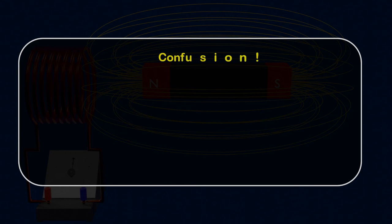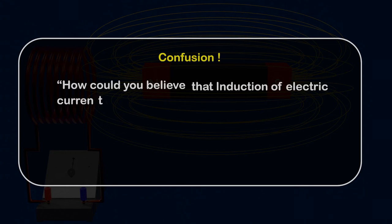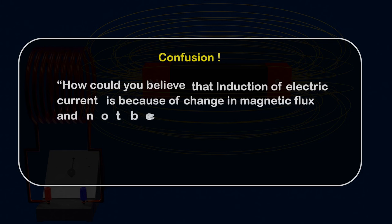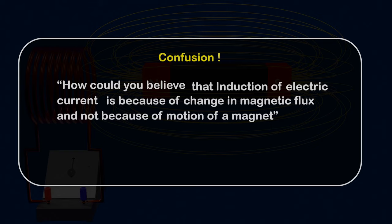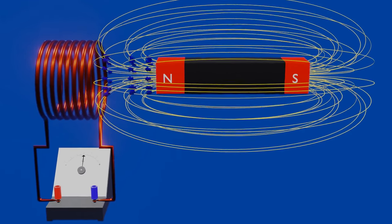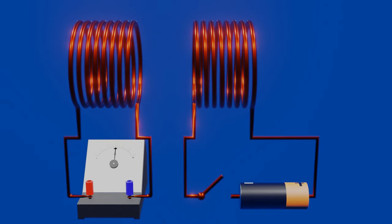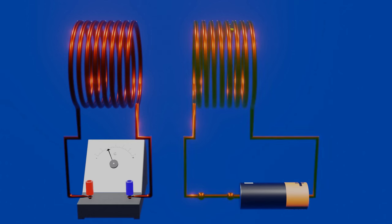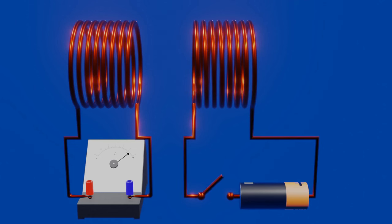It might leave you with the confusion of how you could believe that induction of electric current is because of change in magnetic flux and not because of motion of the magnet. To make it clear, let's do another experiment. This time we will replace the magnet with another coil connected in series with a battery in an open circuit. When we close the circuit, just for that moment the galvanometer connected to the adjacent coil shows an indication of induced current. A similar phenomenon occurs when we again open the circuit. But this time we don't have any magnet or motion of a magnet — so what causes that instantaneous current?